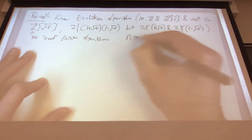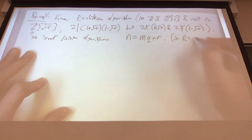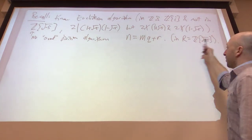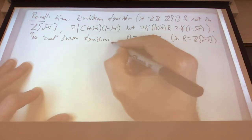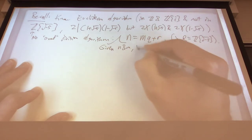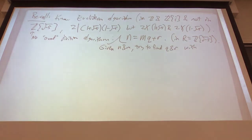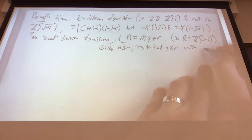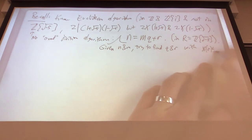Remember what the division algorithm is — this is where everything we've done so far comes from. In this ring R = Z[√-5], if we're given N and M and we're trying to find Q and R with R smaller — we could use complex absolute value. There is a norm here. We want the norm of R strictly smaller than the norm of M.